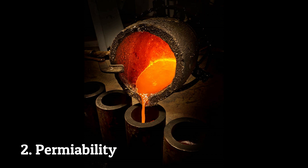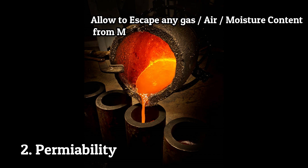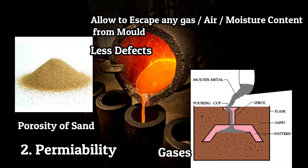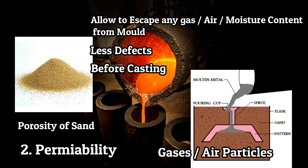Permeability is the property which allows any gas, air, and moisture to escape from the mold. It is also known as the porosity of sand. This property is desirable for making castings without any defects. All gases and air particles are generated during pouring and solidification of molten metal into the mold. These particles should be removed from the mold before casting, otherwise they will generate many defects in the casting product and decrease its strength.